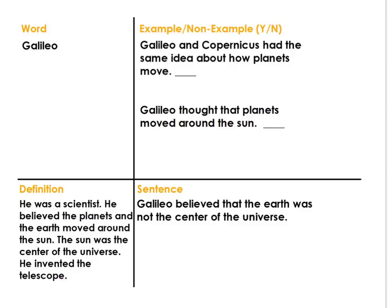Let's read the sentence together: Galileo believed that the earth was not the center of the universe. Example or non-example: Galileo and Copernicus had the same idea about how the planets move. And: Galileo thought that planets moved around the sun.